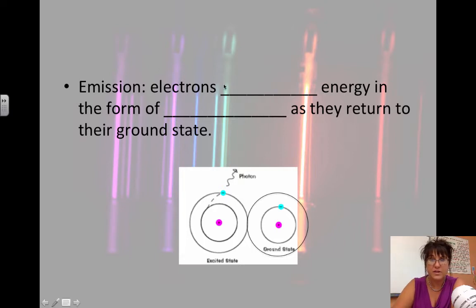In an emission, that's when the electrons emit the energy or they release that extra energy in the form of light as they return to the ground state. So the electron can't go back to where it was until it releases that extra energy. When it releases the energy, we are able to perceive it as a photon of light.